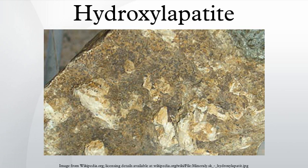Hydroxylapatite can be found in teeth and bones within the human body. Thus, it is commonly used as a filler to replace amputated bone or as a coating to promote bone ingrowth into prosthetic implants. Although many other phases exist with similar or even identical chemical make-up, the body responds to them very differently. Coral skeletons can be transformed into hydroxylapatite by high temperatures. Their porous structure allows relatively rapid ingrowth at the expense of initial mechanical strength. The high temperature also burns away any organic molecules such as proteins, preventing an immune response and rejection.